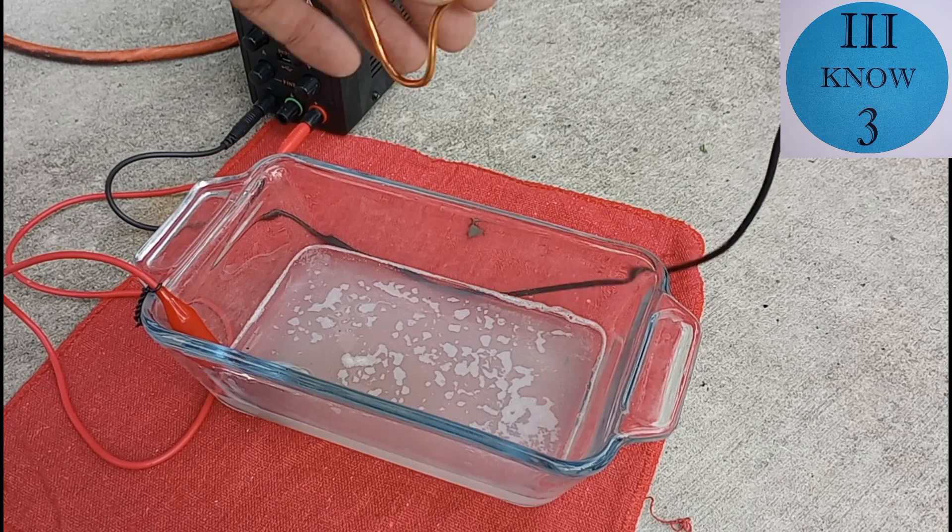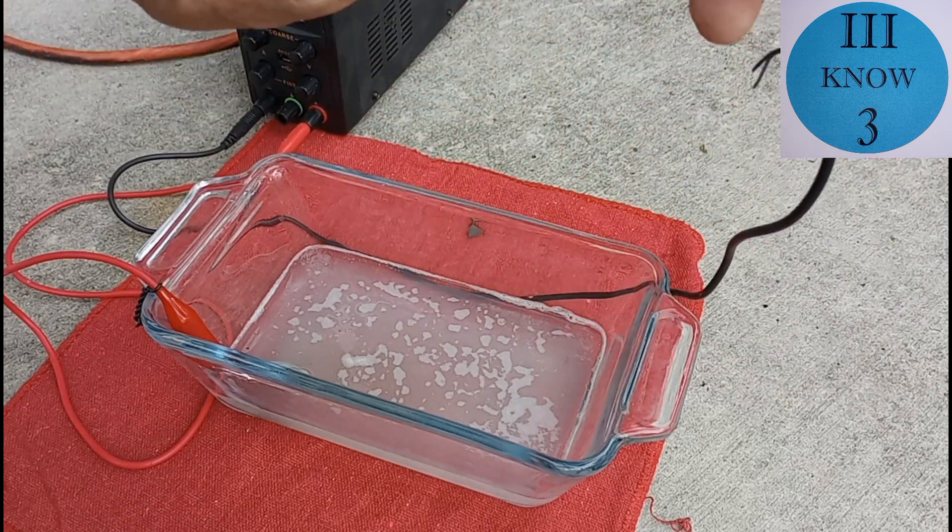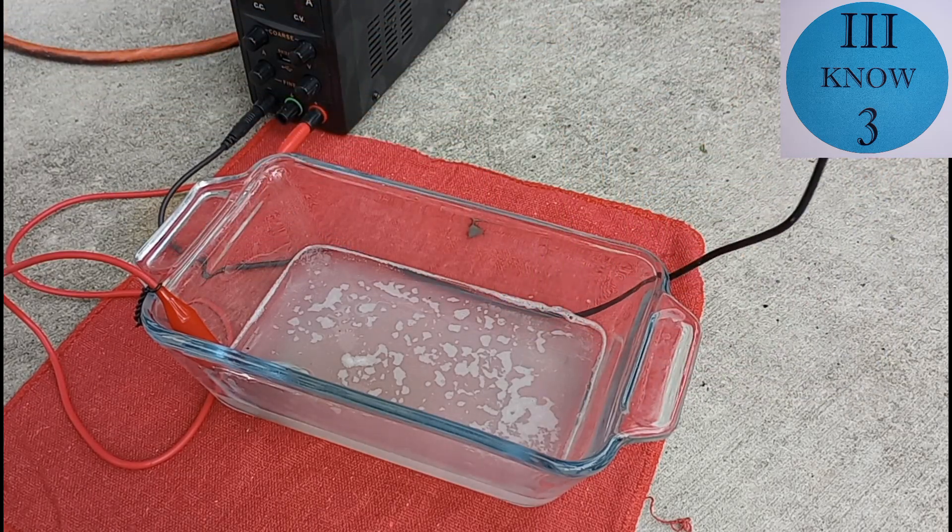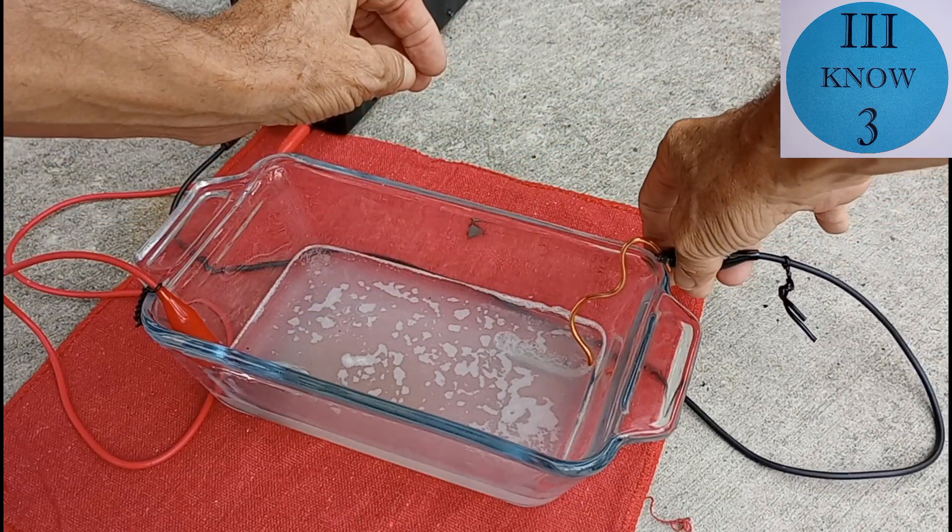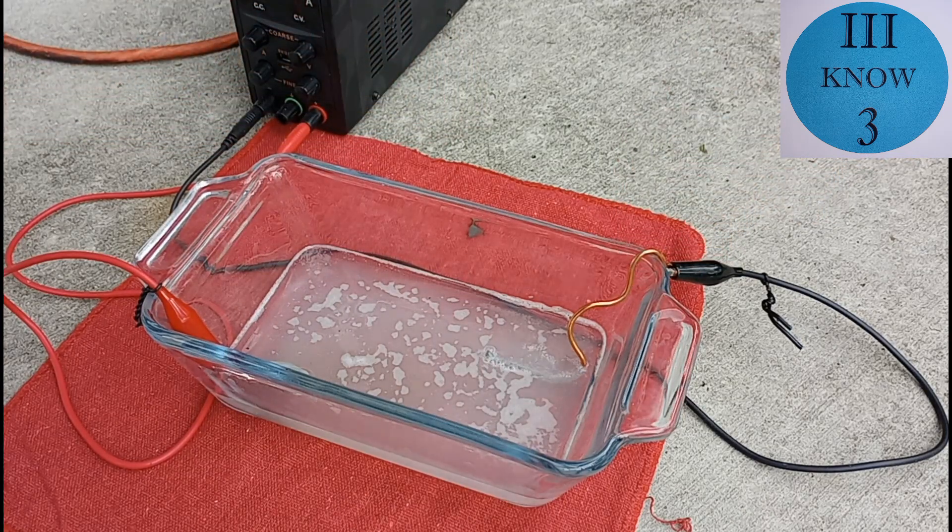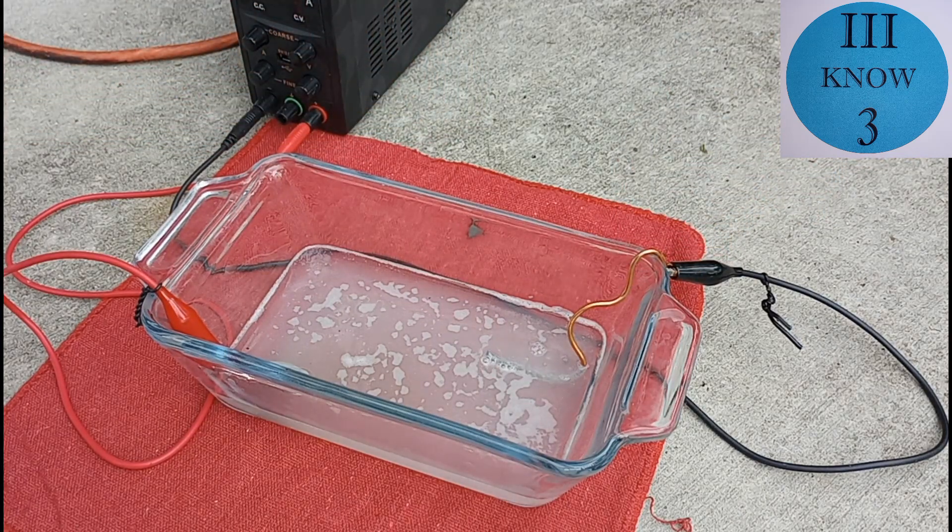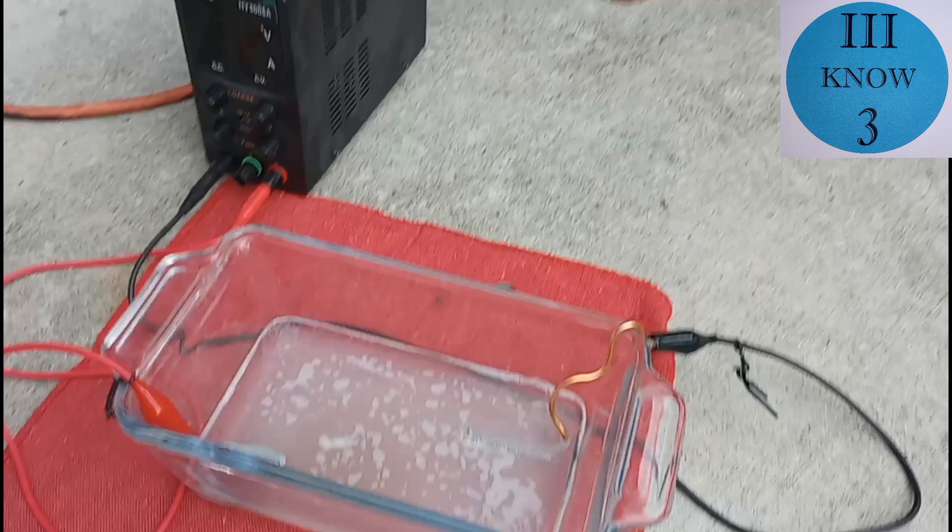So I'm going to switch the cathode from the nickel strip to a copper wire. If nothing else, the copper wire will be more resistant to the hydrochloric acid and maybe we can get some good tin growth on it.